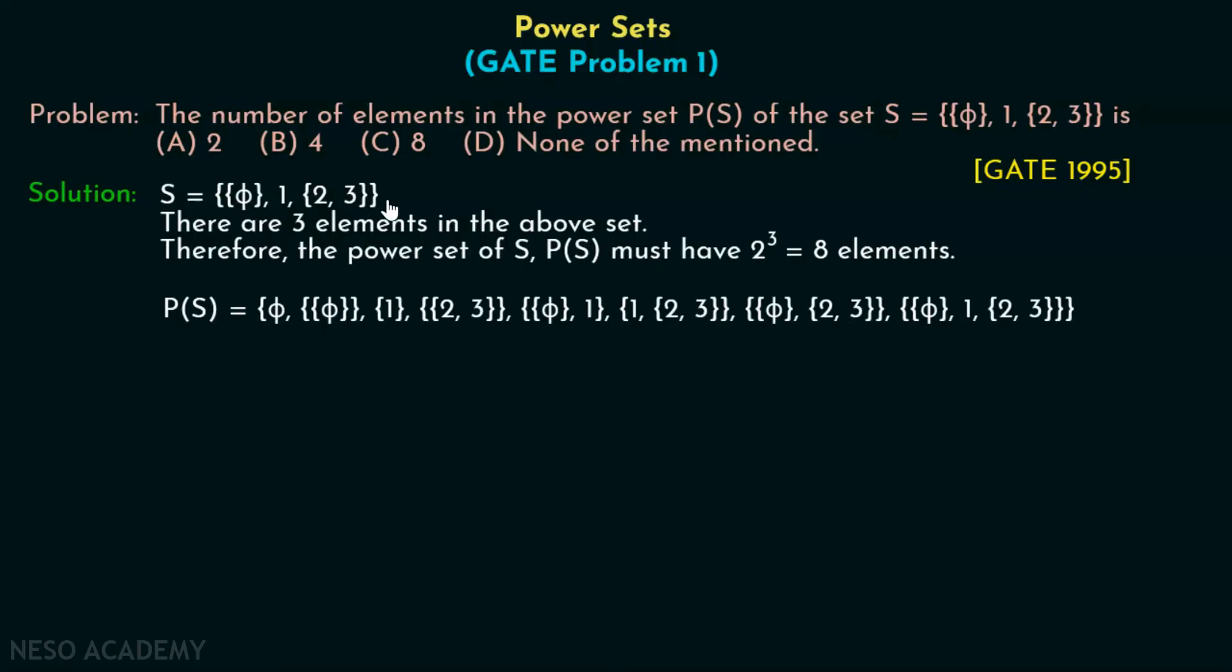After this, we will include all these 3 elements within a set. That means we will include this whole set within this set. We have a set with the first element, second element, and third element. That is a set with φ, 1, and a set with elements 2 and 3.